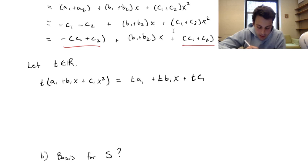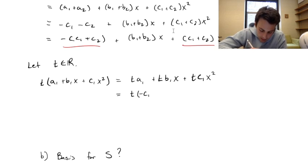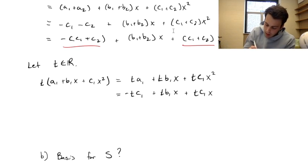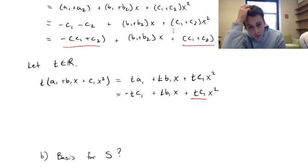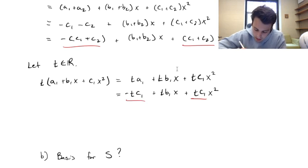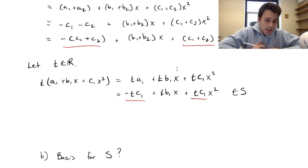We know that a1 is just going to be negative c1, so moving the negative outside, the zero-degree coefficient and the second-degree coefficient are negatives of each other. This satisfies the condition of S, so the scalar multiple is also in S.